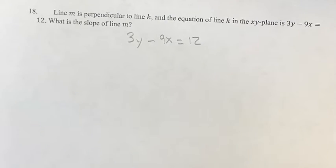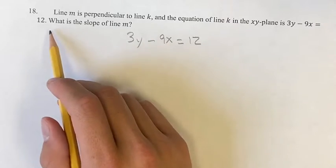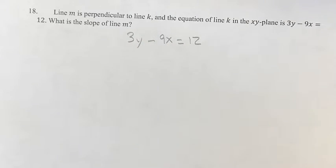Given the fact that line m and line k are perpendicular to each other, what is the slope of line m? So if two lines are perpendicular to each other, their slopes are going to be opposite reciprocals. What does that mean? Well we're going to see in a second.